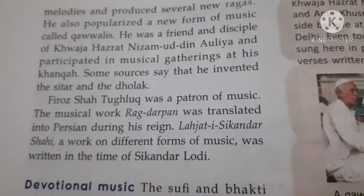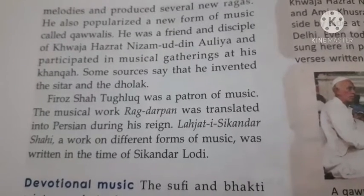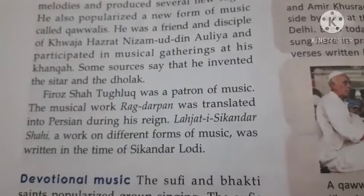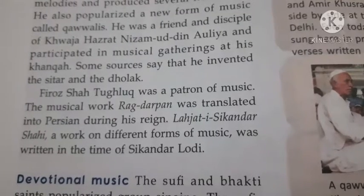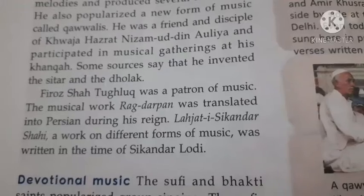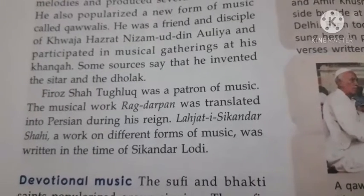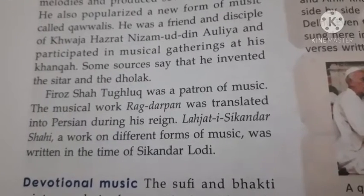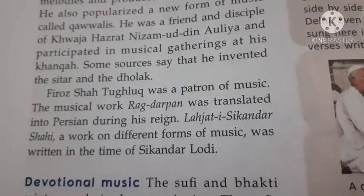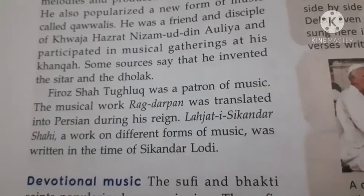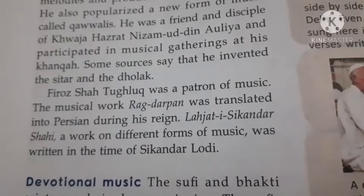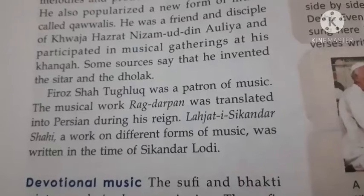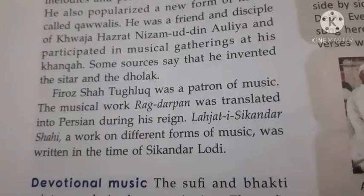Amir Khusro popularized a new form of music called Qawwali. He was a friend and disciple of Khwaja Hazrat Nizamuddin Auliya and participated in musical gatherings at his khanqah. Some sources say that he invented the sitar and dholak. Firoz Tughlaq was also a patron of music, and the musical work Raghdarpan was translated into Persian during his reign.